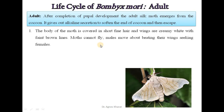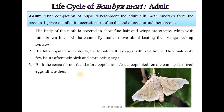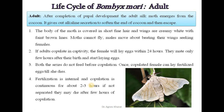The moth cannot fly. Males move about beating their wings seeking females. If adults copulate in captivity, the female will lay eggs within 24 hours. They mate only a few hours after their birth and start laying eggs. Both sexes do not feed before copulation. Once copulated, the female can lay fertilized eggs till she dies. Fertilization is internal and copulation is continuous for about 2–3 hours.